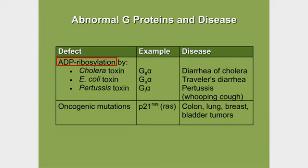But when pertussis toxin is secreted by the respective organism, then alpha I of GI becomes ADP ribosylated. On the next figure I'll review what ADP ribosylation means. But when alpha I is ADP ribosylated, it affects cyclic AMP levels as well — cyclic AMP levels will increase, resulting in pertussis as the consequence of cyclic AMP levels rising.